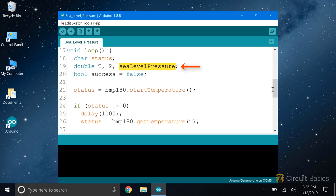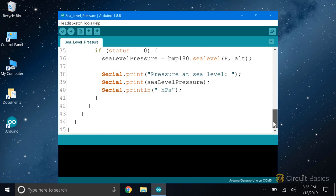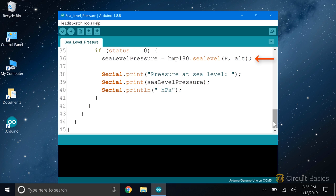In the loop, we have a new double variable called sea level pressure, which will hold the sea level pressure measurement. In the last if statement, we use the sea level function provided by the BMP180 library. This function uses the international barometric formula to calculate the sea level pressure. We pass the P variable as the argument, which holds the pressure measured by the BMP180. Then we pass it the ALT variable, which holds your current altitude. Now we print out the result to the serial monitor.